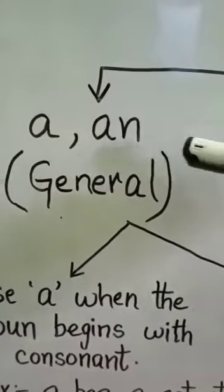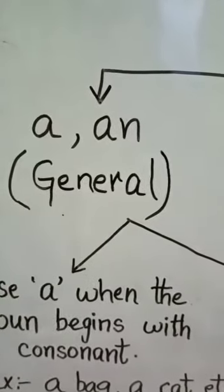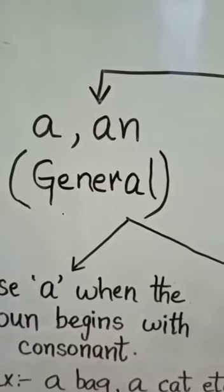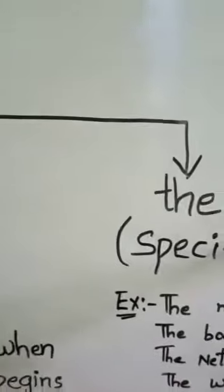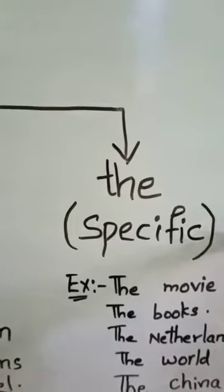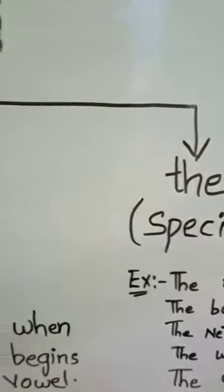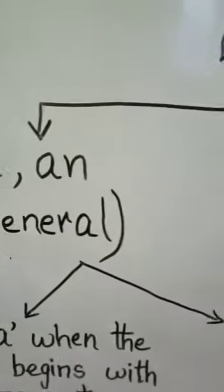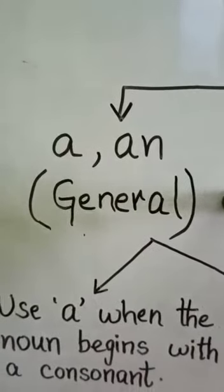Here A or an is used for general things. Whereas the is used for a specific noun, for particular things. So A or an is used for general things, general nouns you can say.